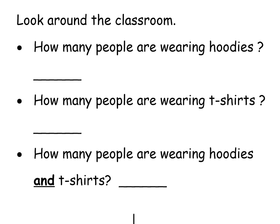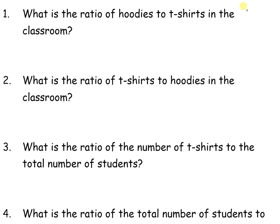Let's try another one. This one we'll have to do as a class, so I'm going to make up some information so that we can solve the following problems. If you're doing this in class, you can use the actual people in your class; if not, you can use the data I made up. How many people are wearing hoodies? I'm going to say 10 people. How many people are wearing t-shirts? I'm going to say 22. How many people are wearing hoodies and t-shirts total? That would be 32. I'll rewrite the data: hoodies equal 10, t-shirts equal 22, and all equals 32.